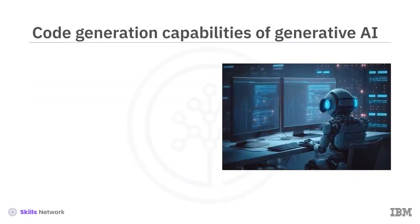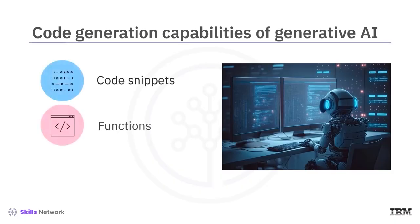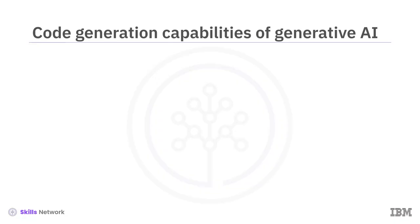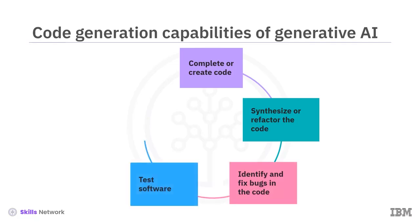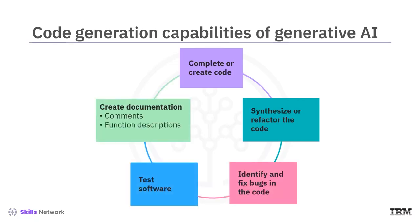Generative models can generate new code snippets, functions, or complete programs based on desired functionality. Trained on existing code repositories, these models can complete or create code, synthesize or refactor code, identify and fix bugs in code, test software, and create documentation, including comments, function descriptions, and usage examples.